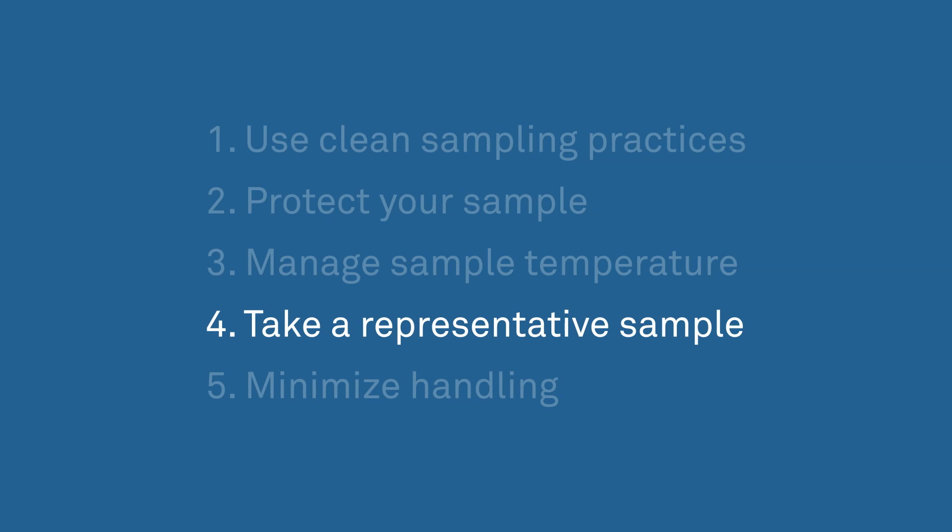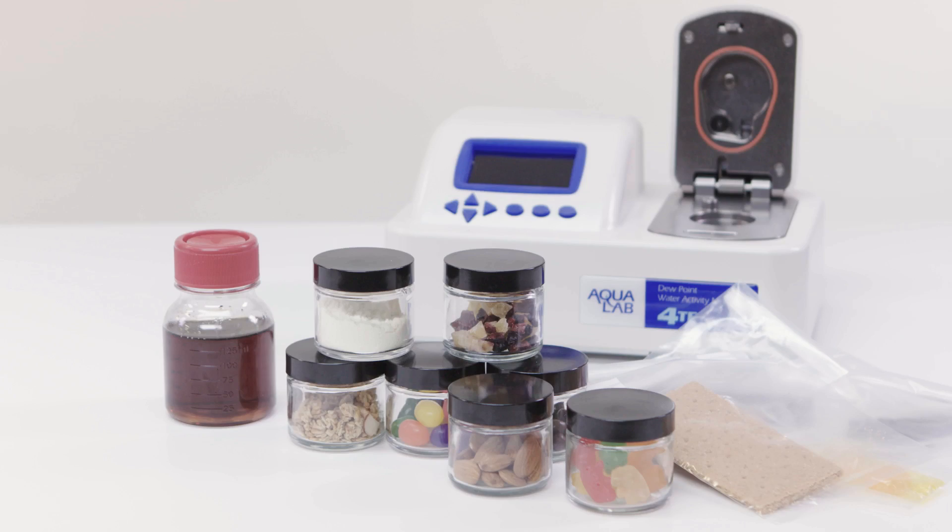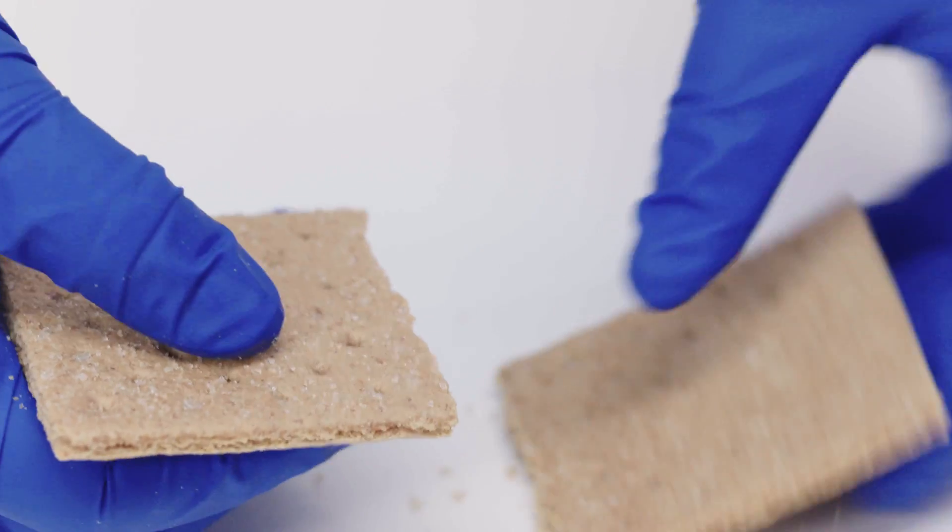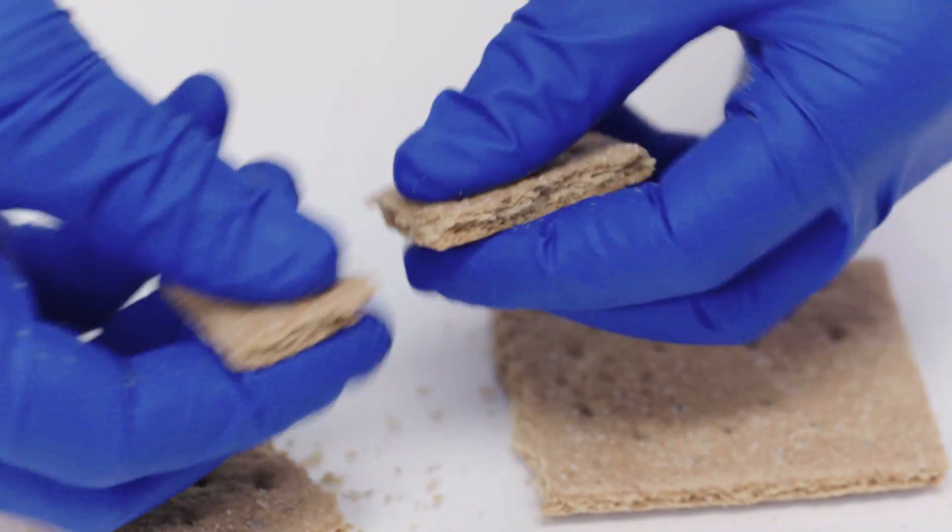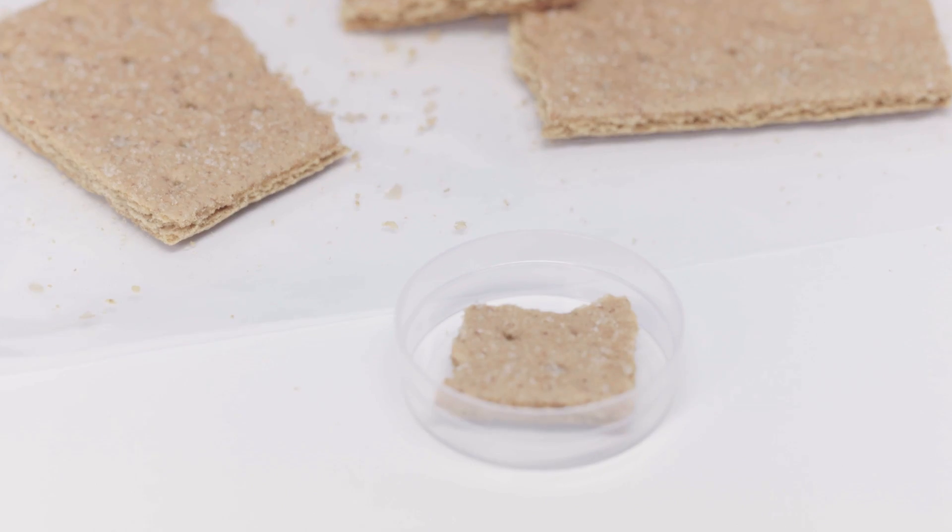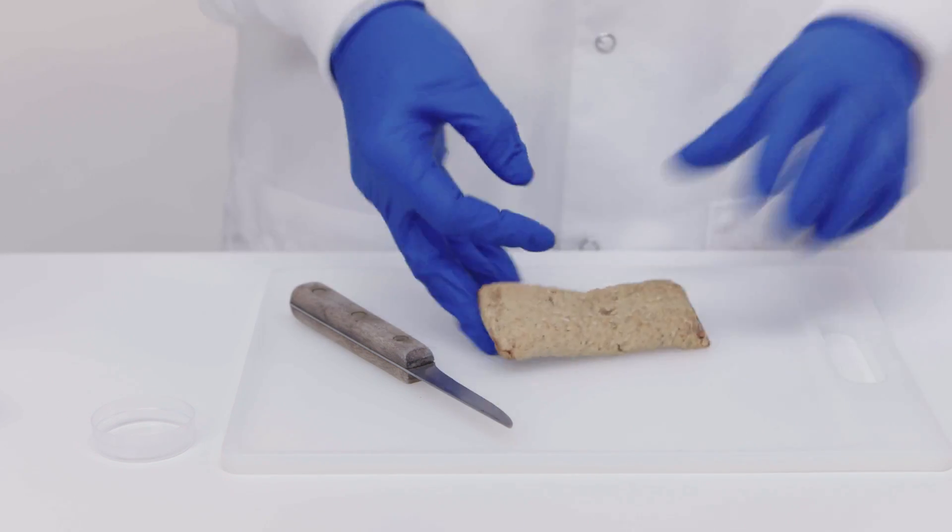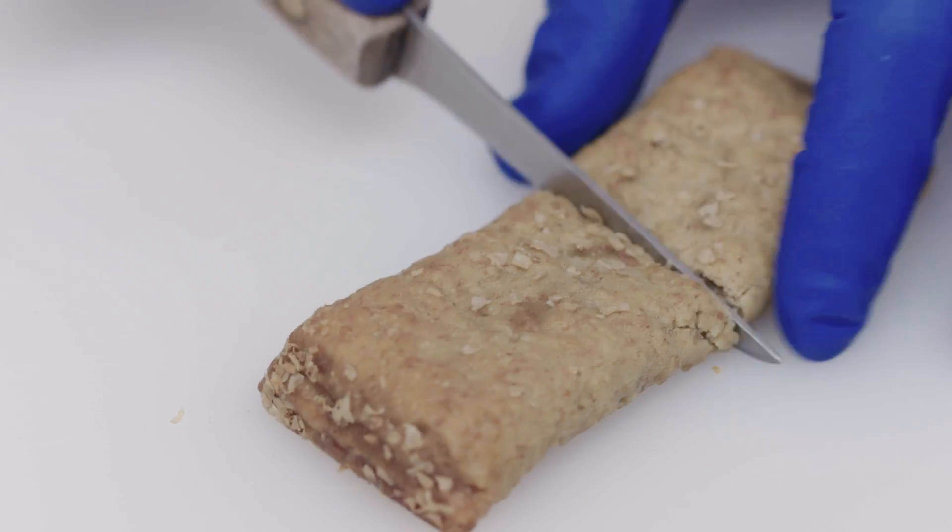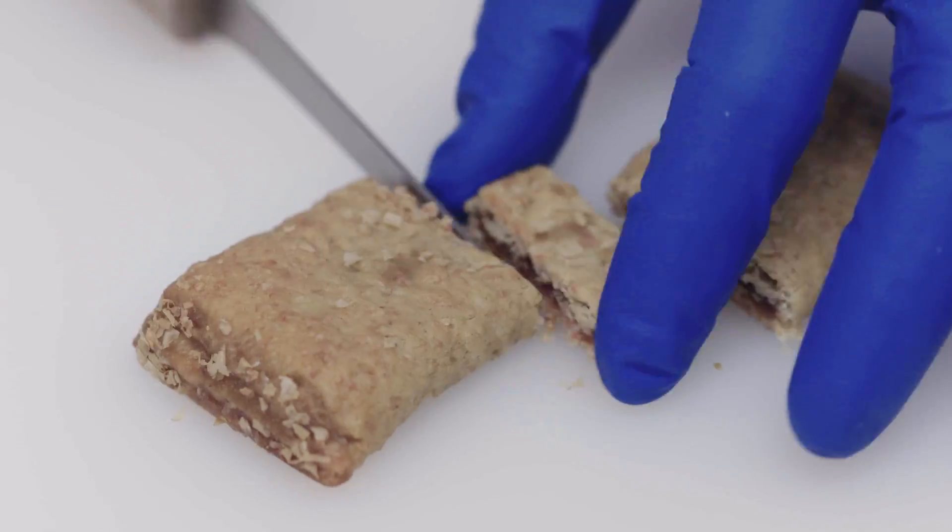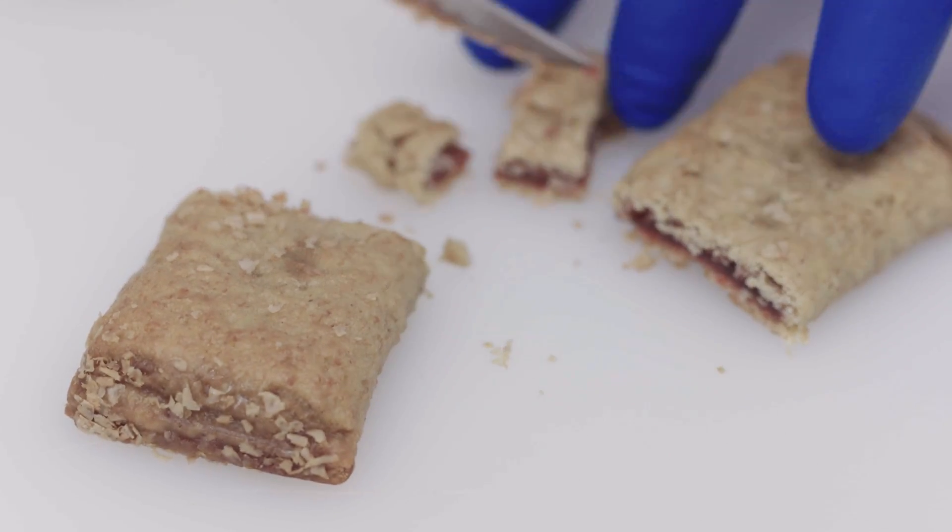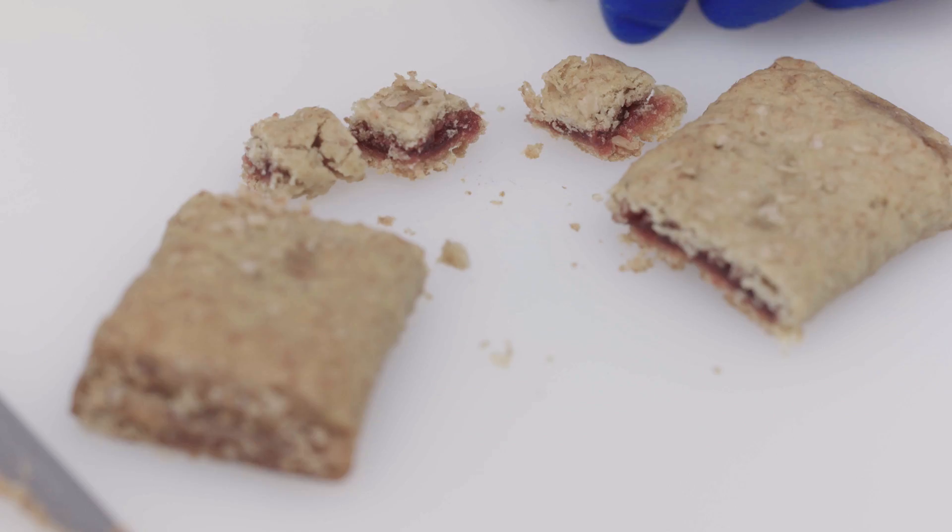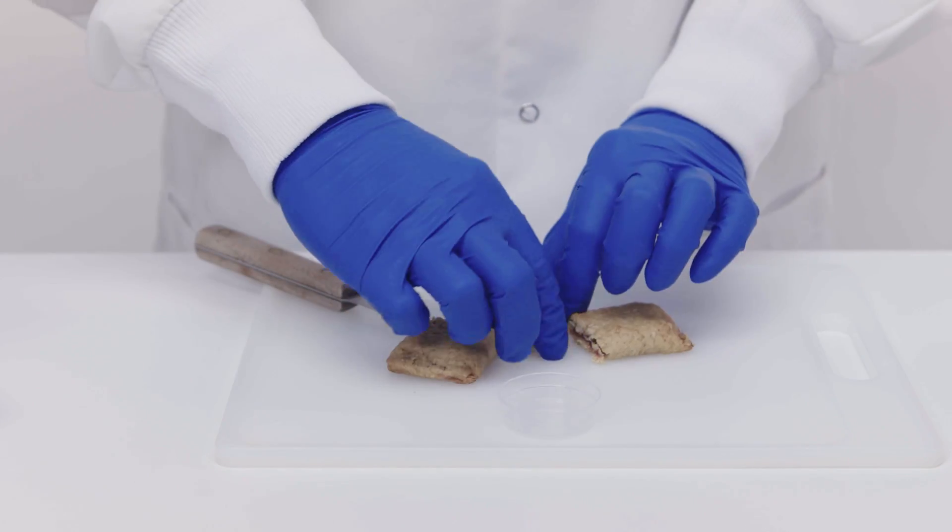Four, take a representative sample. Whatever you put in the cup should be as close as possible to what the consumer takes out of the package. If the product won't fit, break it to fit while minimizing handling. If it's a multi-component product like filled cake, cheese and crackers, or cereal with fruit, get a representative sample. By representative, we mean that all the components of the product should be represented in the same ratio as they are in the actual product.